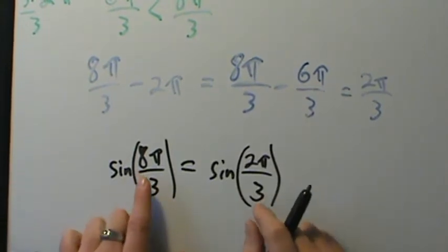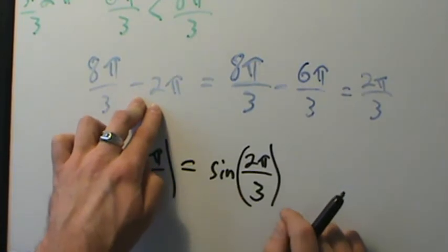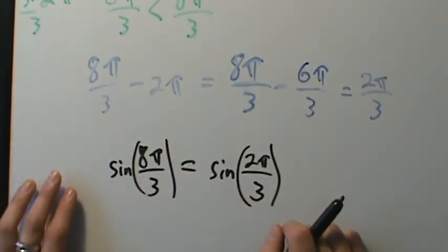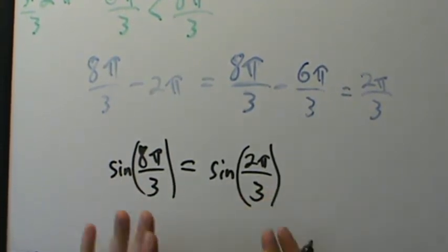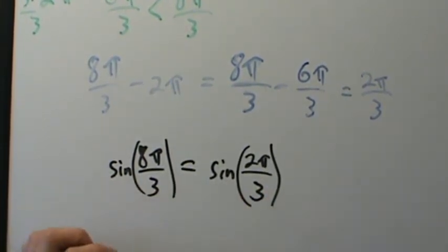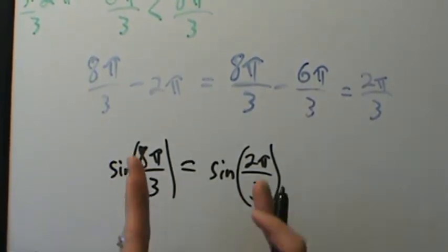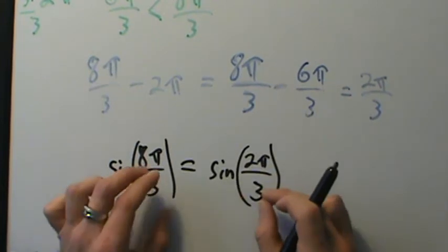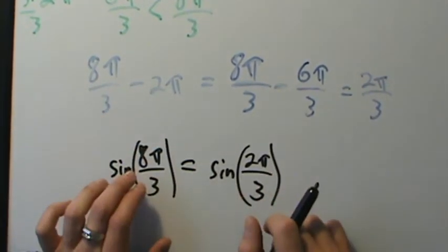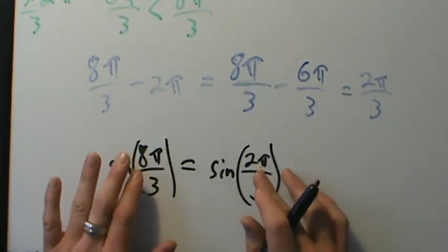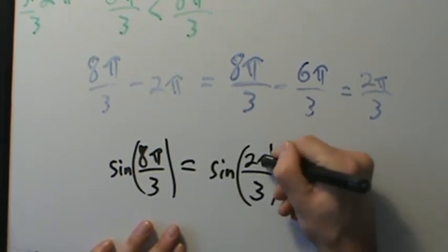Why is that? Because 8π over 3 and 2π over 3 differ by 2π. So if we take 8π over 3 and subtract 2π, we get 2π over 3. The periodic properties of the sine function tell us that sine of 8π over 3 and sine of 2π over 3 are the same, because the difference between them is 2π, and the period of sine is 2π.